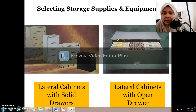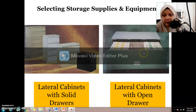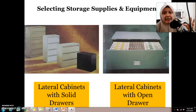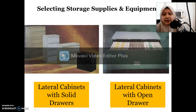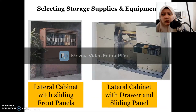Here are examples of equipment from the textbook. This is a lateral cabinet — we have a solid drawer, and the next picture shows an open drawer. The lateral cabinet is a combination of top-access and side-access equipment. As you can see, we have side access and top access available in this unit.